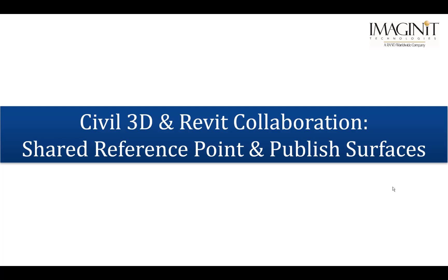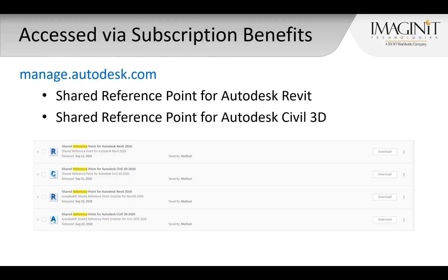In this video tech tip, I'll be going over the collaborative workflow process for sharing reference points and publishing surfaces between Civil 3D and Revit. The shared reference point utilities are available to subscription customers and can be found by logging in to manage.autodesk.com. This utility is available for the 2019 and 2020 versions of Civil 3D and Revit.